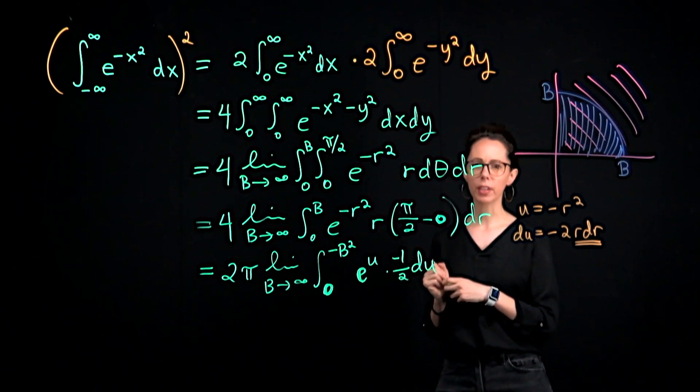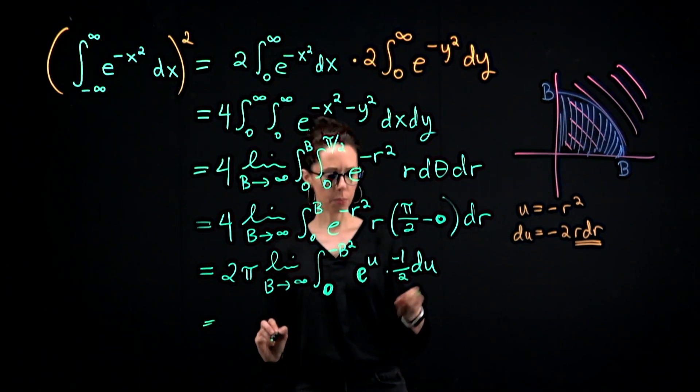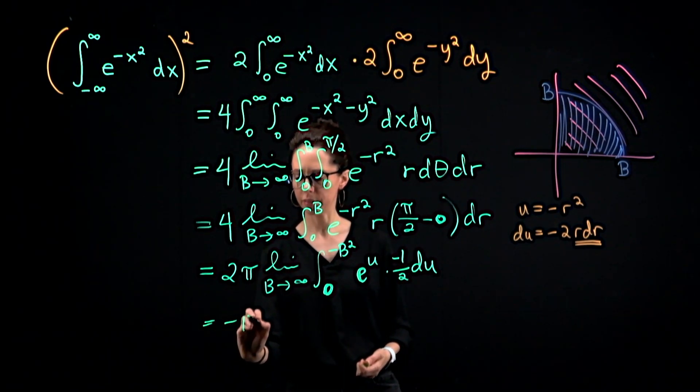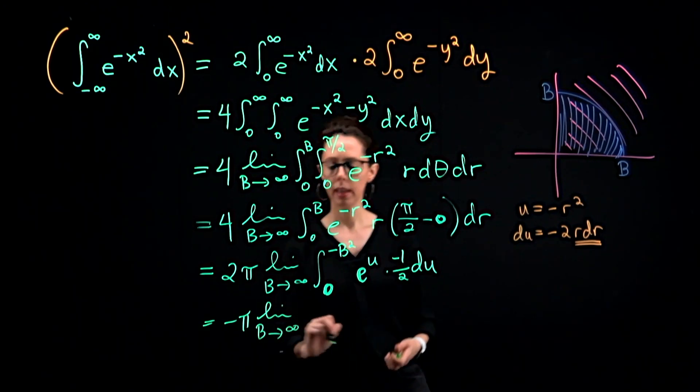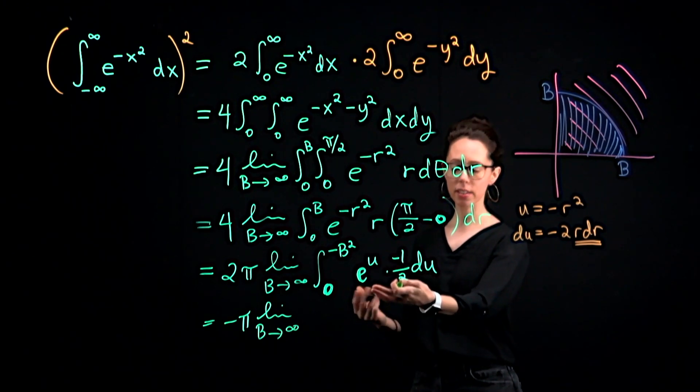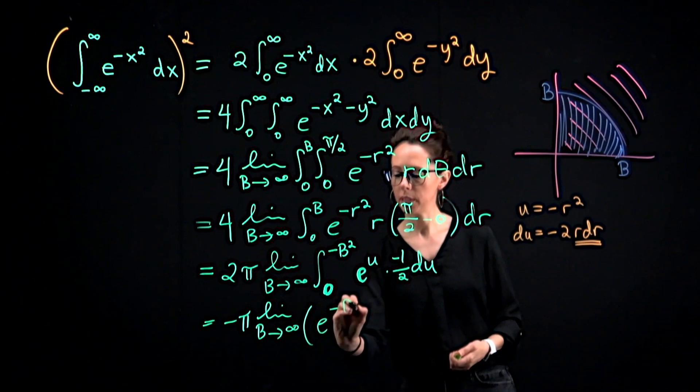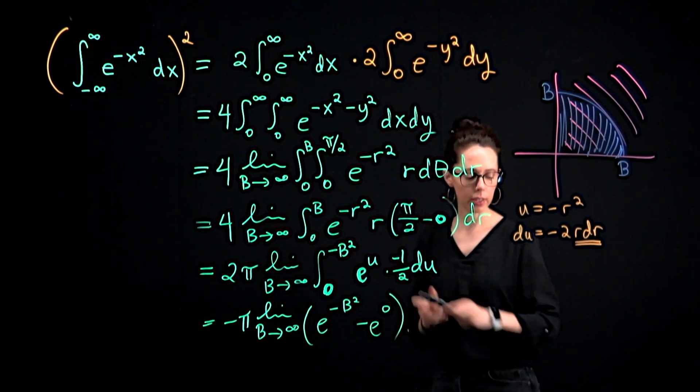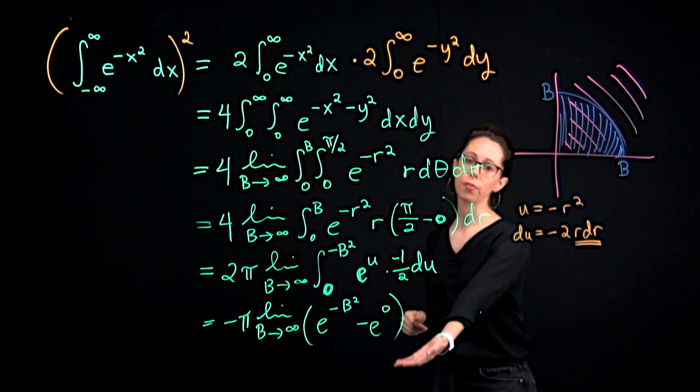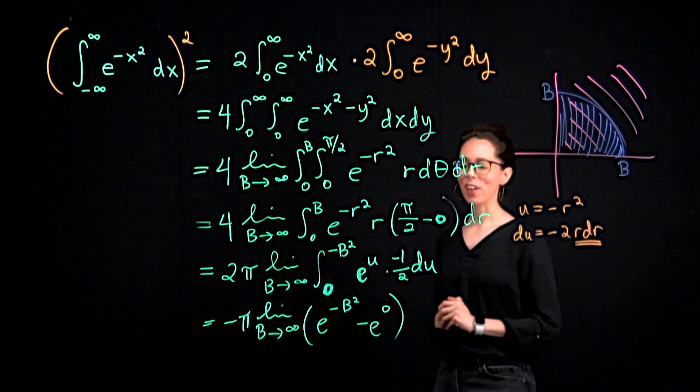I think we can finish this all on the next line because at this point it's not too bad. Let's pull the negative one half out front to write negative pi times the limit as B goes to infinity. We can anti-differentiate e to the u. It is just e to the u. So let's go ahead and plug in our bounds. e to the negative B squared minus e to the zero. Pause if you need to and make sure I didn't go too fast here. So work through this computation if you need. And then we will come back and just finish the final answer.